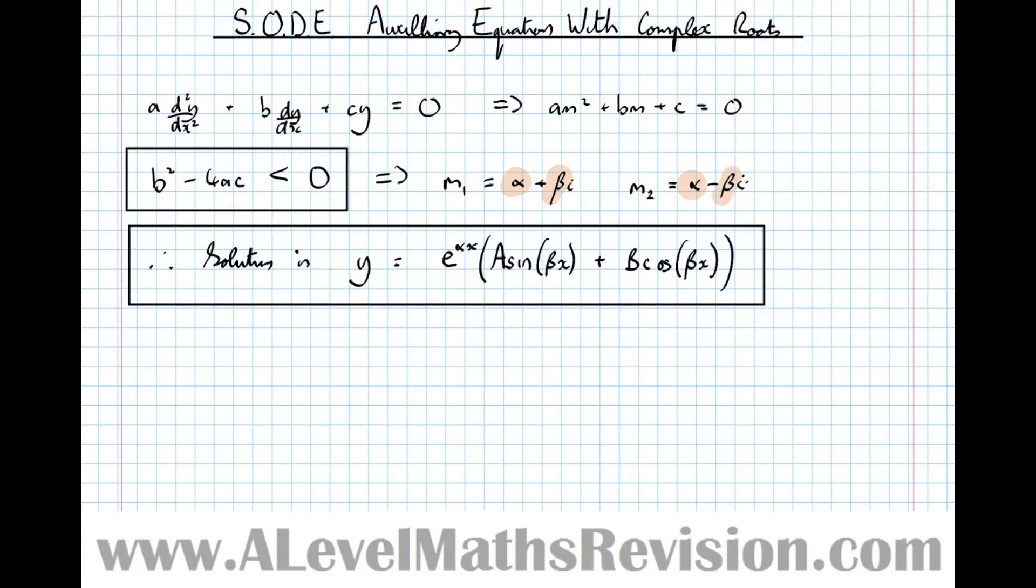Whenever b² - 4ac is less than 0, the auxiliary equation gives these solutions here. So the solution to the whole equation is that there. And now we're going to prove it.